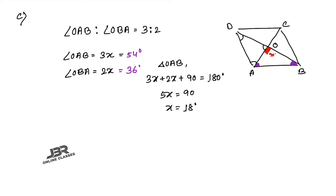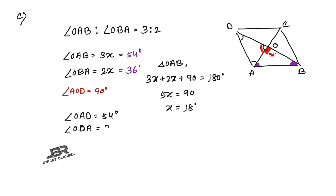Since angle OAB = 54° and angle AOB = 90°, and diagonals are perpendicular, angle AOD = 90° as well. For triangle AOD: angle OAD = 54° and angle ODA = 36°. These three values — angle AOD = 90°, angle OAD = 54°, angle ODA = 36° — are your answers.